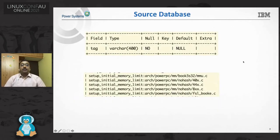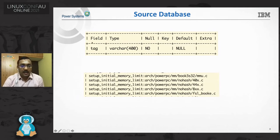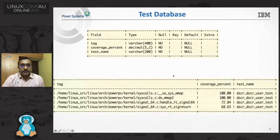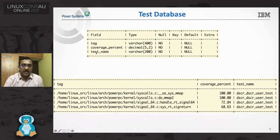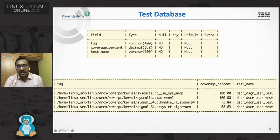Here is the source database schema — just the tag, with an example record being function name colon file name. And here is the test database schema, where we take the tag, coverage percentage, and test name. An example record looks like: file name colon function name, coverage percentage, and then the test case name.